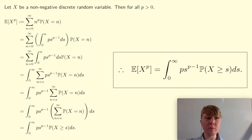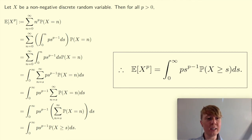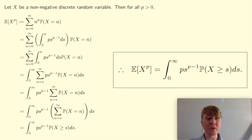I'll show what the argument looks like in the discrete case. For a discrete integer-valued non-negative random variable, the expectation of x to the p can be written as the sum of n to the power of p multiplied by the probability X equals n. Then you write n to the power of p as the inner integral between 0 and n of p s to the p minus 1, just as before. You can then use Tonelli's theorem to interchange the order of integration and summation — this is absolutely fine as long as you're integrating a positive function and summing positive terms, and you'll get the exact same result.